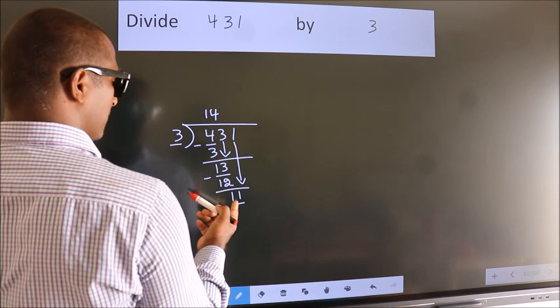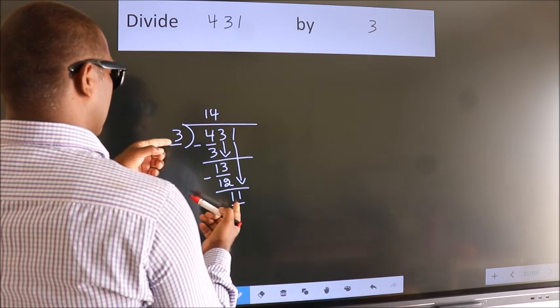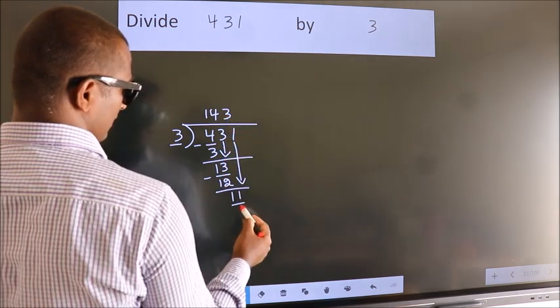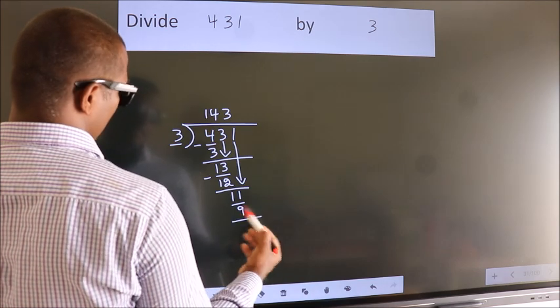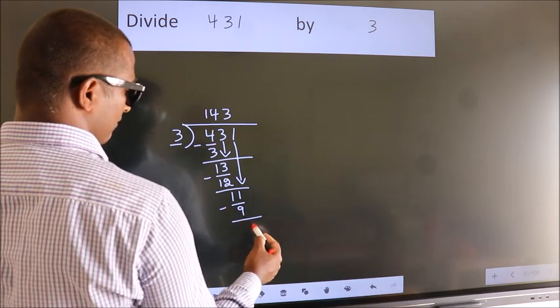So, 11. A number close to 11 in 3 table is 3 3s 9. Now, we subtract. We get 2.